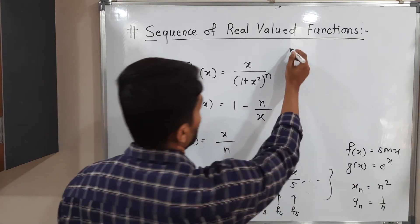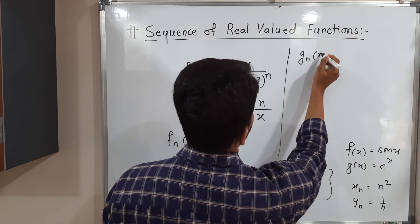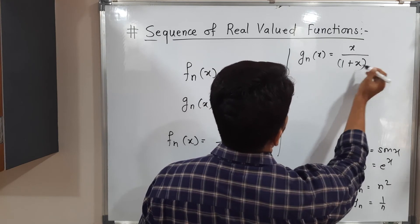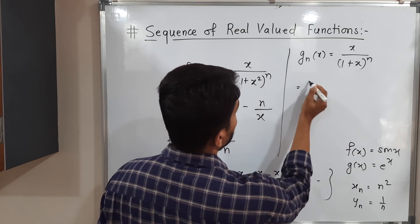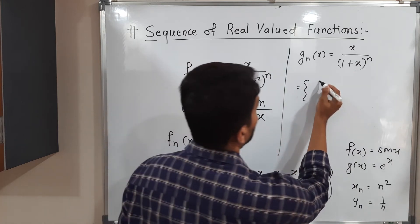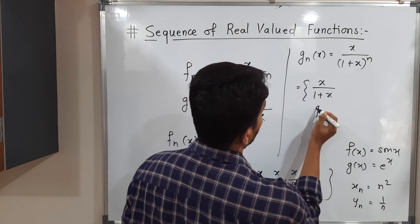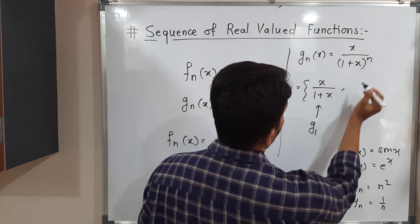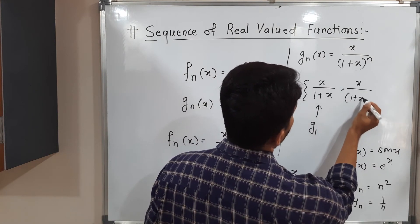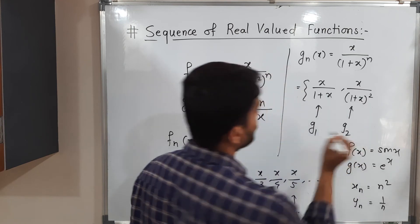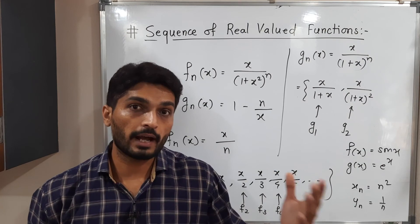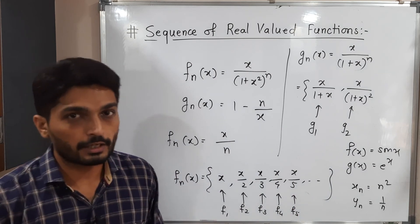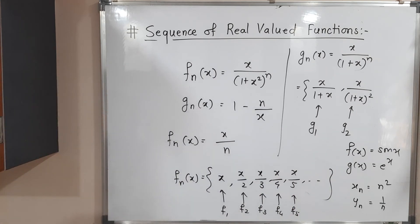Let us discuss one more example. Suppose we have gn(x) = x upon (1 + x) raised to 2n. If I put n = 1, we have the first function x upon (1 + x), which we call g1(x). If n = 2, we have x upon (1 + x) squared — this is g2. If n = 3, we get the third function g3. In this way, we have a sequence of functions. This is the actual concept of sequence of real-valued functions.